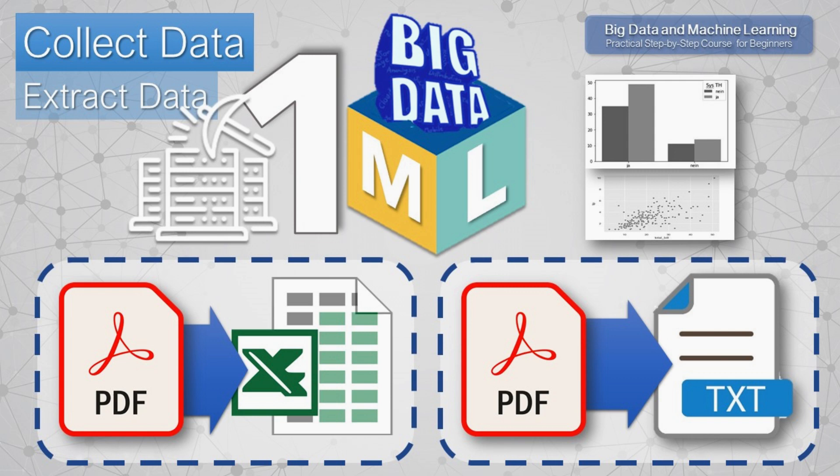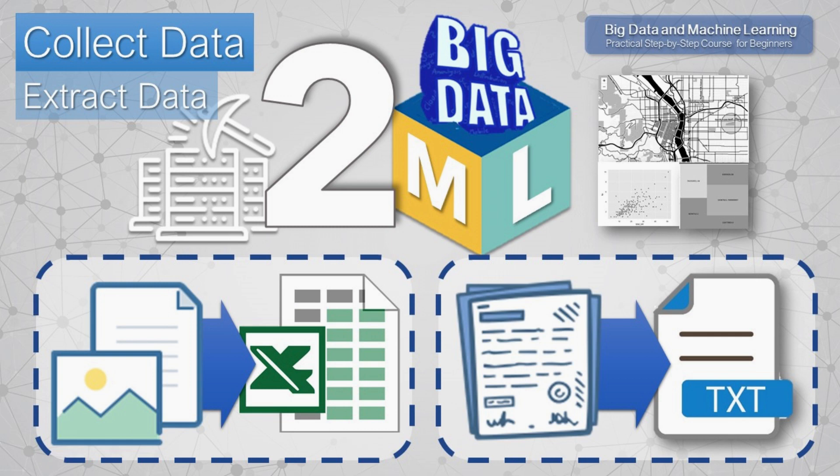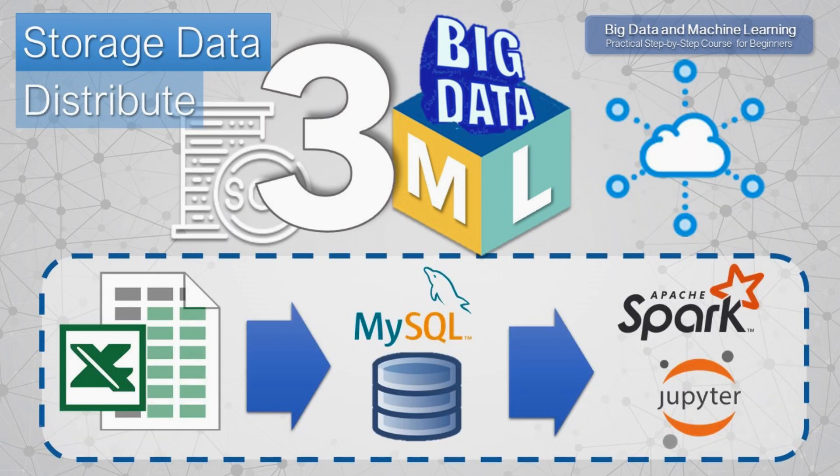In the first two courses, we will collect data from drawings, contracts, receipts and other documents, and will translate scanned documents and files of various formats into text and tabular form. In the third part, we will install the MySQL server and transfer our Excel spreadsheet to the MySQL server, and with the help of the connector, we will work in a distributed manner with large datasets using Apache Spark.